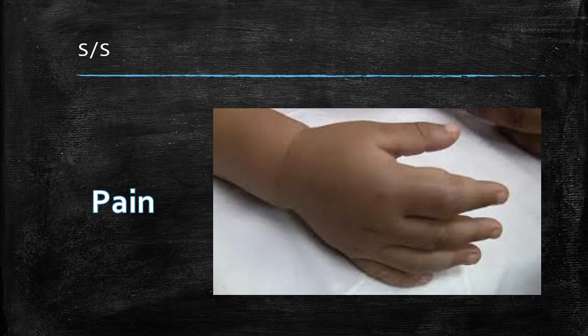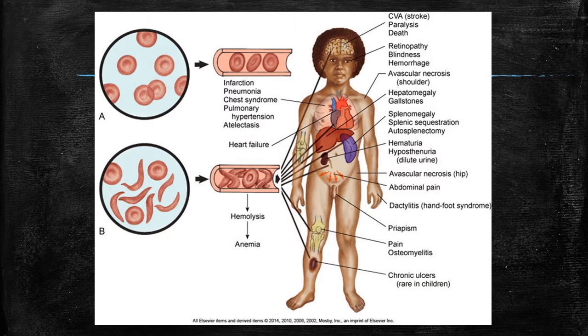The majority of manifestations depend upon the type of crisis the child is in. General symptoms include growth retardation, anemia, susceptibility to infection, and unusual swelling of the fingers and toes. Symptoms are caused by enlarging bone marrow sites that impair circulation of the bone and the abnormal sickle cell shape that causes clumping, obstruction in the vessel, and ischemia to the organ the vessel supplies. Pain is a major symptom for these kids and is related to the area of involvement. Clinical features of sickle cell anemia include CVA, paralysis, possibility of death, blindness, hemorrhage, avascular necrosis, hepatomegaly, gallstones, and so forth.